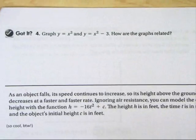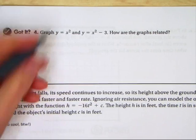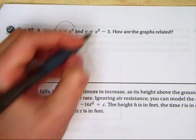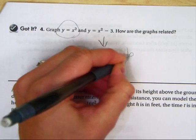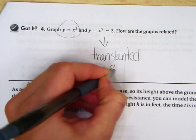Problem 4. How are these graphs related? Well, if this one's the normal one, this one is what we call translated down 3 units.